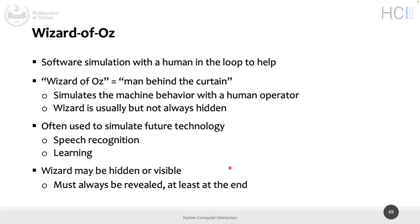This technique is often used to simulate future technology — not just to replace things we can do easily, but to simulate how people will behave with future technology. Like 100% accurate speech recognition that we don't have right now, or perfect conversation between a person and a machine, or a machine that learns what you say and remembers it three hours later — all things we cannot do 100% successfully now.